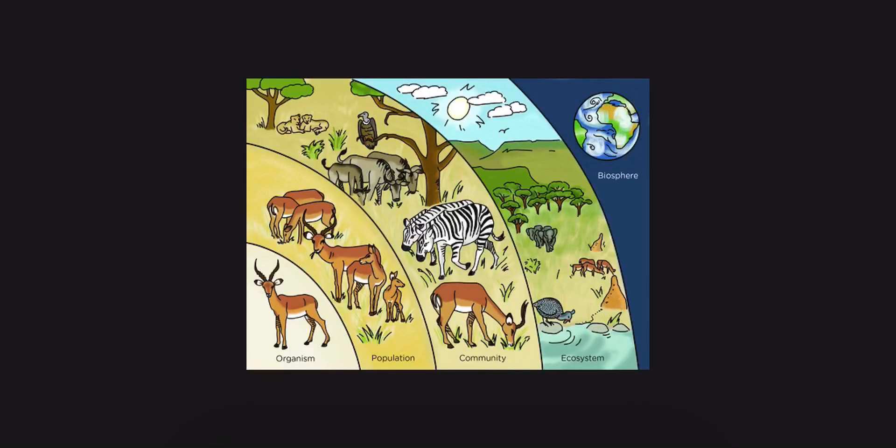Hi everybody, my name is Ms. Heaney and today we are going to talk about the different parts of an ecosystem. The first thing that we are going to talk about is an organism. An organism is defined as one living thing. In this example, we have an antelope. An antelope is an animal. This is a living thing.